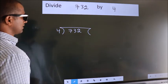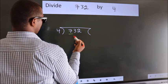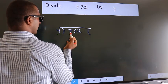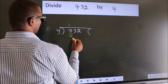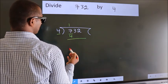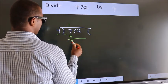Next. Here we have 7. Here 4. A number close to 7 in 4 table is 4 once 4. Now we should subtract. We get 3.